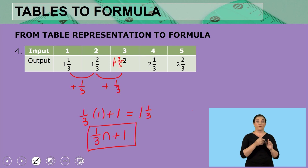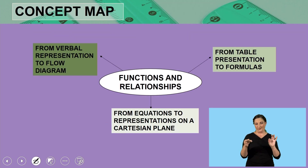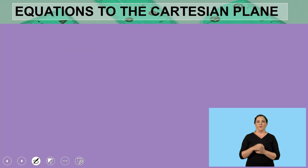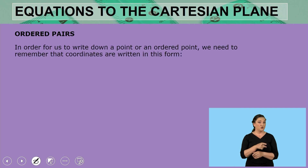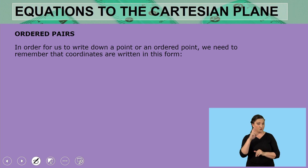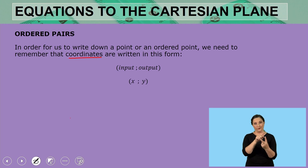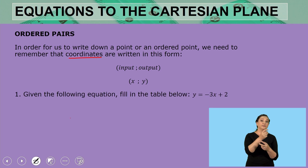That is how we move from table representation to a formula representation. Now let's move to our last point: from equations or formulas to representations on a Cartesian plane. Before we can represent our equation on a Cartesian plane we need to look at ordered pairs. To write a point or ordered pair we need coordinates in the form of input and output — that is our x and our y.